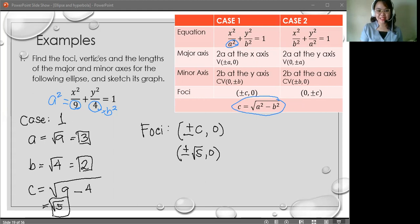Next, for the vertices. The formula here is positive, negative, a, 0. So we substitute the value of a here, which is 3. So we have positive, negative, 3, 0. So we're good for the foci and vertices.